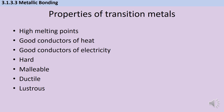So here are some other properties of transition metals — the metals that are in that central D block with incomplete D subshells. They have high melting points. They're good conductors of heat and electricity. They're hard. They're malleable. They're ductile. And they're lustrous or shiny.